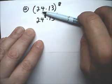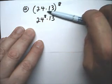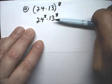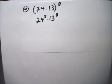This 8 means I'm going to have 8 of these. That means 8 24s and 8 13s, so I end up with 24 to the eighth times 13 to the eighth.